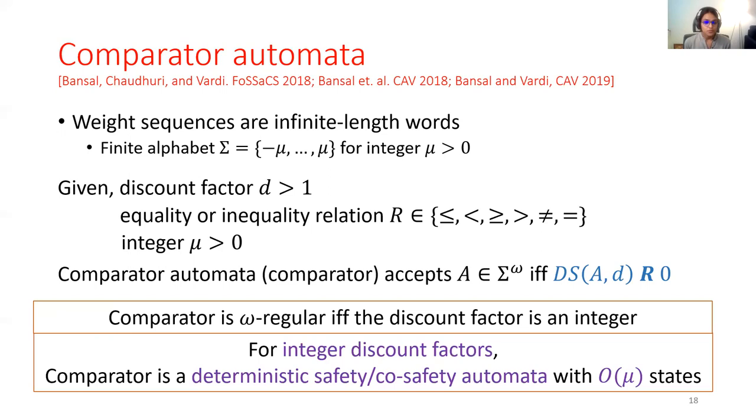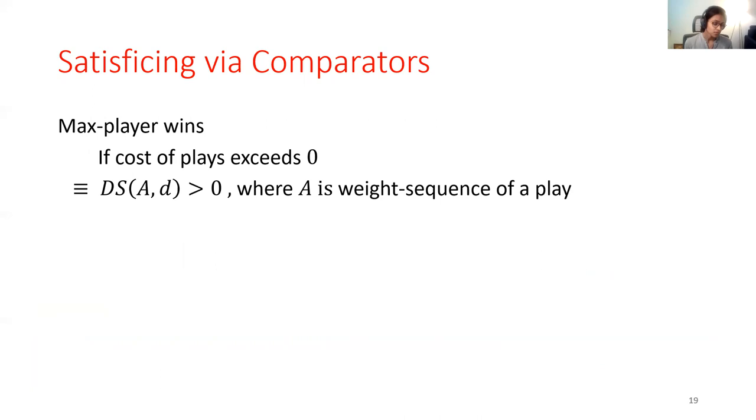This can be strengthened a bit more because we also know that when discount factors are integers, then the comparator is a much simpler automata. It's actually simply a deterministic safety or co-safety automata.